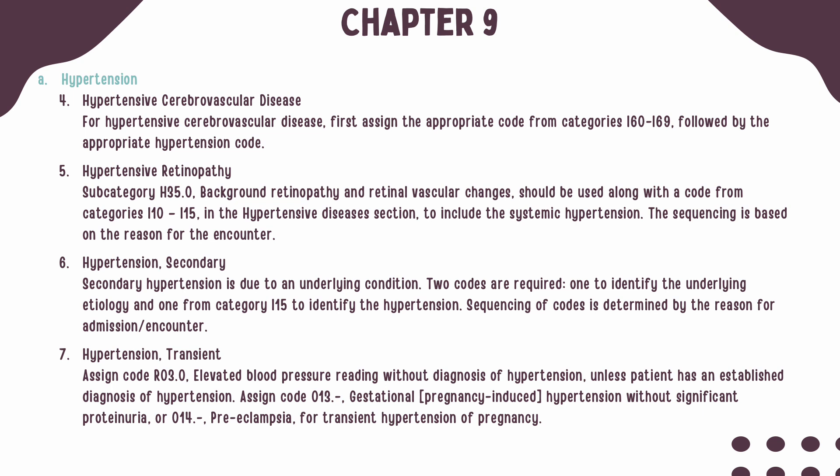Secondary hypertension is when hypertension is due to an underlying condition. Two codes are needed: one to identify the underlying cause, and a second from Category I-15 to identify the hypertension itself. Sequencing is determined by the reason for the encounter or admission. Transient hypertension is elevated blood pressure that later returns to normal; this should be coded with code R-03.0, unless the patient has an established diagnosis of hypertension.